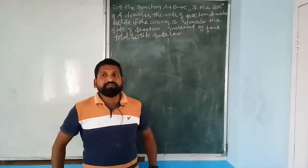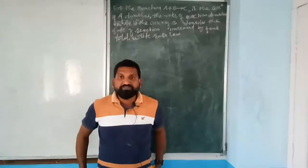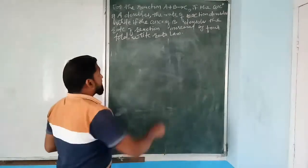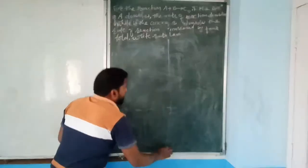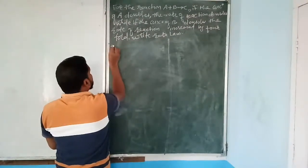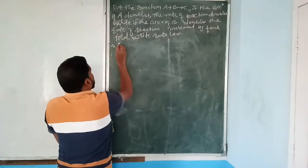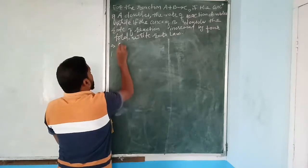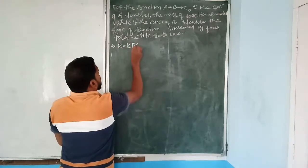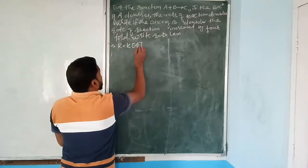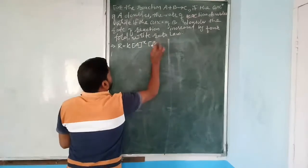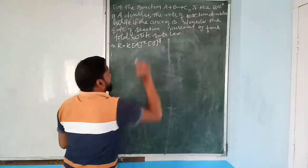Two conditions are given. Generally we express rate law as R = k[A]^x [B]^y. We write R₁ = k[A₁]^x [B₁]^y. Condition 1: if concentration of A doubles (A₂ = 2A₁), the rate also doubles (R₂ = 2R₁). Therefore R₂ = k(2A₁)^x [B₁]^y.